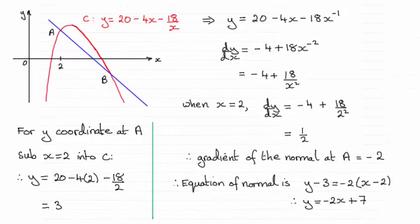Hi there. So for this question you had to show that the normal to this curve C at the point A where x equals 2 had this equation y equals minus 2x plus 7.